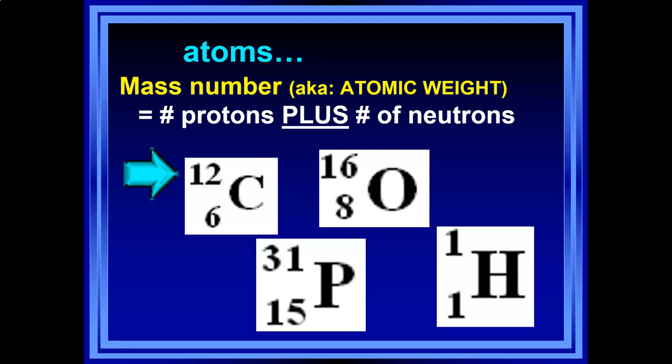For carbon: mass number is 12 (protons plus neutrons), subtract the atomic number 6 (protons), and whatever's left are neutrons — so 12 minus 6 gives carbon 6 neutrons. For hydrogen: 1 minus 1 equals 0 — hydrogen has no neutrons. For phosphorus: 31 minus 15 equals 16 neutrons.